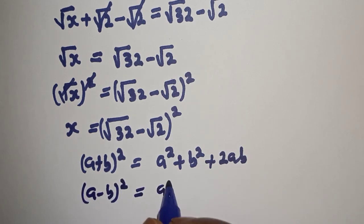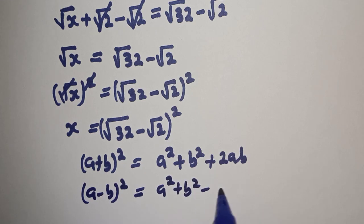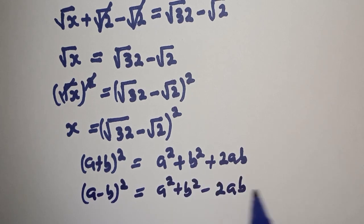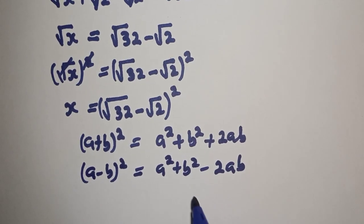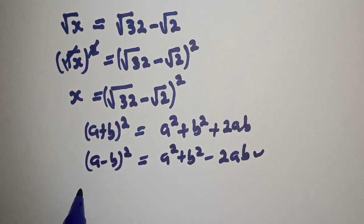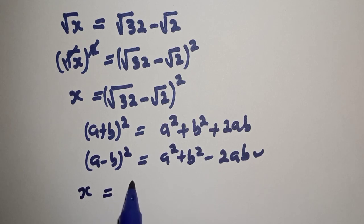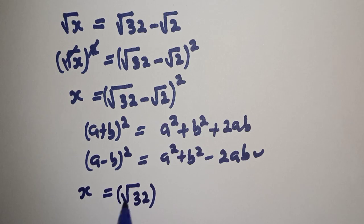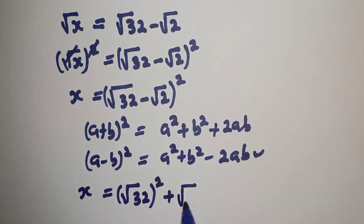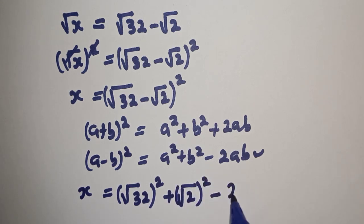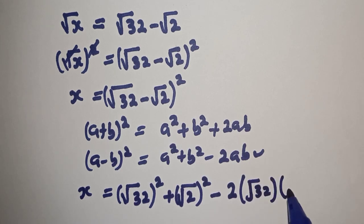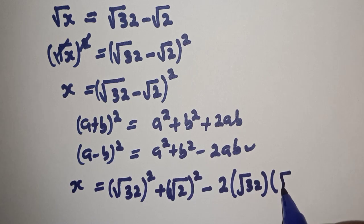This is equal to a squared plus b squared minus 2ab. Then we make use of this. S is equal to square root of 32 squared, which is a, plus square root of 2 squared, which is b, minus 2 multiplied by square root of 32 multiplied by square root of 2.